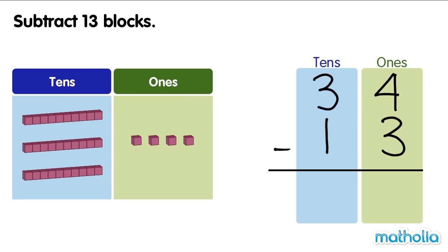Let's start by subtracting the ones. 4 ones minus 3 ones equals 1 one.